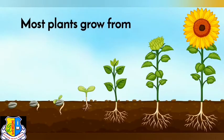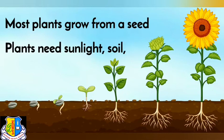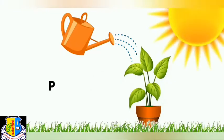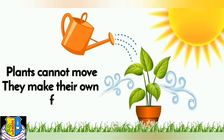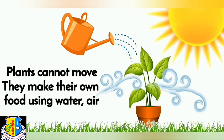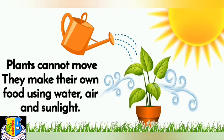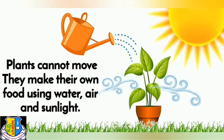Most plants grow from a seed. Plants need sunlight, soil, water and air to grow. Plants cannot move. They make their own food using water, air and sunlight.